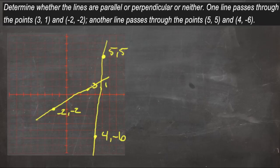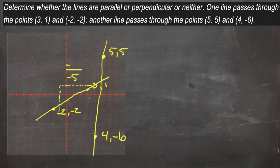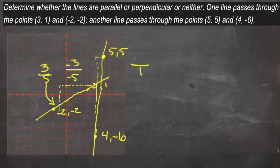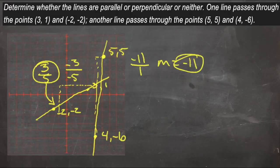This line has an x change of -3 and a y change back to... working through the calculation, this one has a slope of 3/5. The other line has an x change of 1, going from 5 back to 4, and a y change from 5 down to -6, so a y change of -11, giving a slope of -11. The two slopes, 3/5 and -11, are neither equal nor negative reciprocals of each other, so these two lines are neither parallel nor perpendicular.